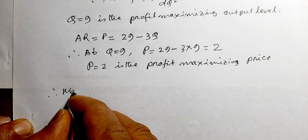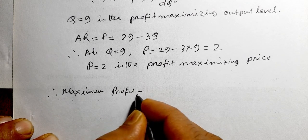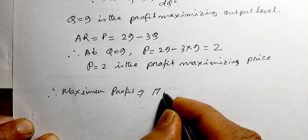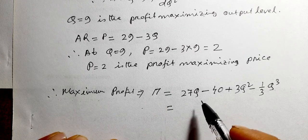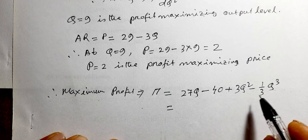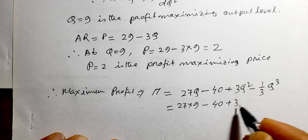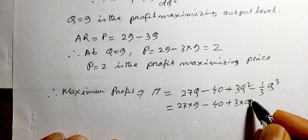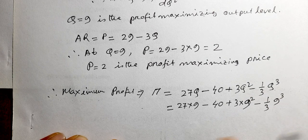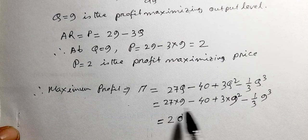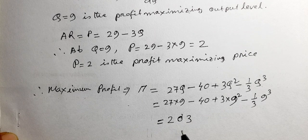Therefore, maximum profit π, substituting q equals 9 into the profit function: 27 times 9 minus 40 plus 3 times 9² minus (1/3) times 9³. After calculation, we get the value of π equal to 203. So 203 is the maximum profit.